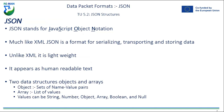So what does that leave us with? Well, unsurprisingly, JSON is the data packet format proposed for use with MQTT. It stands for JavaScript Object Notation, and much like XML, JSON is a format for serializing, transporting, and storing data. Unlike XML, it is more lightweight and appears as human-readable text. There are two data structures: objects, which are sets of name-value pairs, and arrays, which are lists of values. The values can be string, number, object, array, boolean, and null.